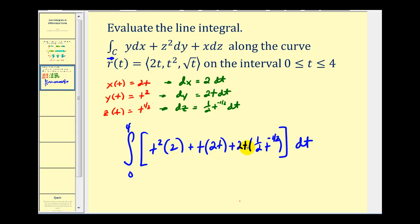So now we just need to simplify this and then find the antiderivative with respect to t. So we have 2t squared plus another 2t squared. Here we'll have two times one-half—that's one—and then t to the first times t to the negative one-half will be t to the one-half.